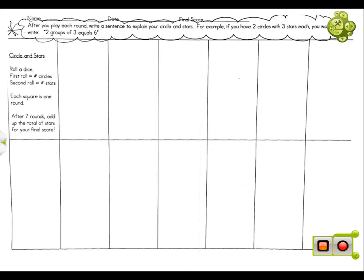So for this round, you're going to do the same thing. You rolled a three, so you have three circles. And then for your stars, you have five. So five stars will go in each circle.